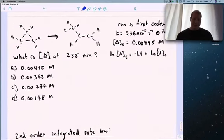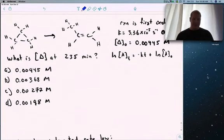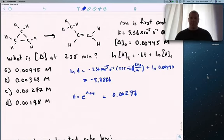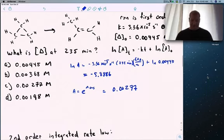Cyclopropane going to propene. The reaction is first order, rate constant is 3.36 times 10 minus 5 inverse seconds, initial concentration 0.0045 molar. What is the concentration after 35 minutes? The tricky part is time was given in minutes and rate constant in seconds. Don't forget to change the units.